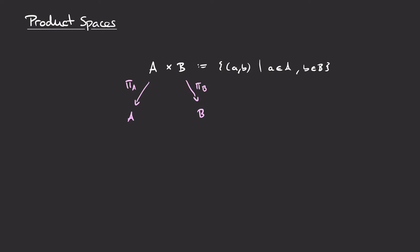What do these maps do? If we have some element (a, b) in the Cartesian product, the projection down to the first component maps this to the element a, and the projection onto B maps the tuple onto its second component, b.